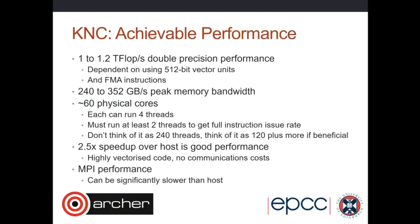Whilst the KNC had a very high potential peak performance of 1.2 teraflops, in reality if you ever got your program to run two or three times faster than a standard compute node - like Archer with two processors of 12 cores each - then you were doing very well. This assumed highly vectorized computations and not moving lots of data across the PCI bus from main memory into the Xeon Phi memory. Just like with GPUs, you can get very good performance as long as you're not shifting data backwards and forwards across the buses.